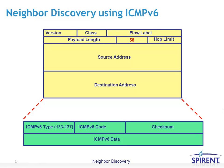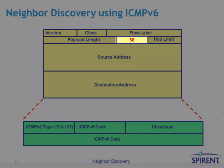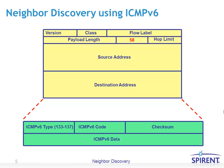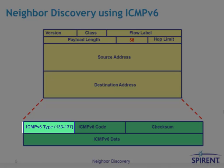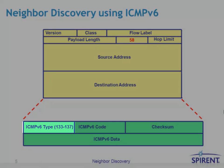Neighbor Discovery uses the ICMPv6 control plane protocol to exchange its messages. The IP header has the next header field set to 58, which indicates ICMPv6. Then you have the ICMP common header — a type, code, and checksum — followed by data. ICMP type messages 133 through 137 are used for Neighbor Discovery messages.